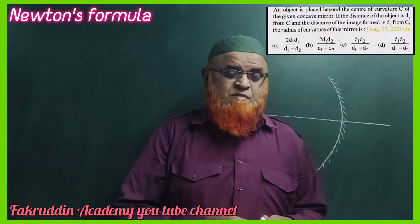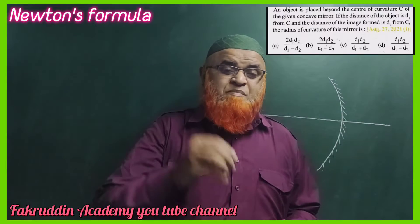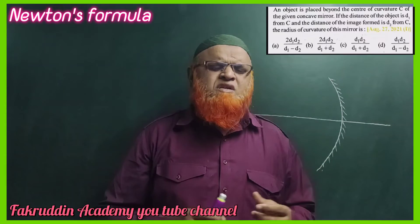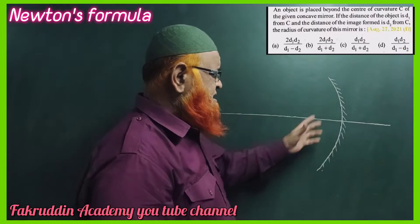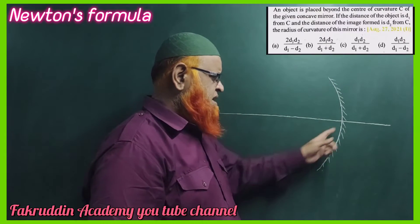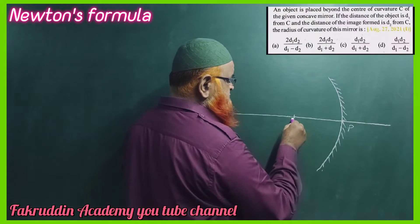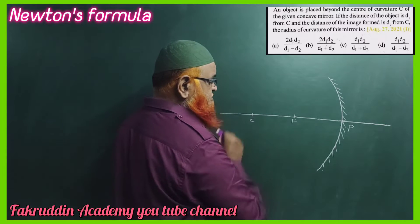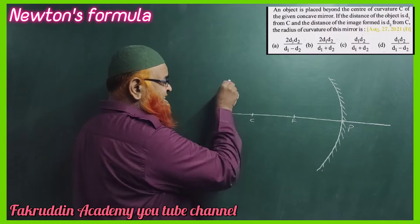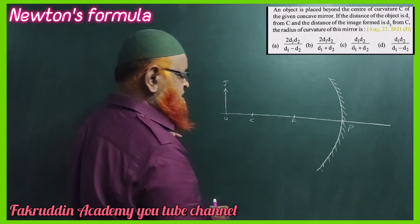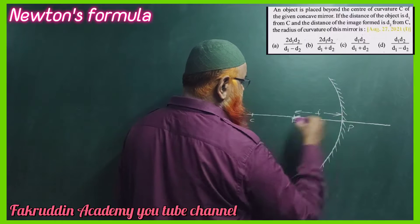Today I would like to discuss a previous year problem and also the concept behind it, called Newton's formula. This is a concave mirror having the pole here, and you all know this is the principal focus and this is the center of curvature. If an object is kept beyond C, this distance from the pole of the mirror is taken as focal length.